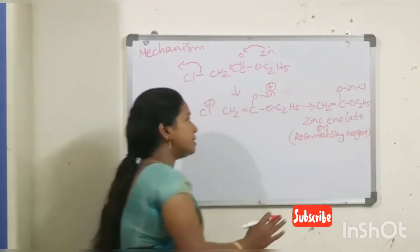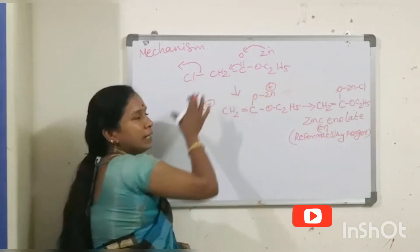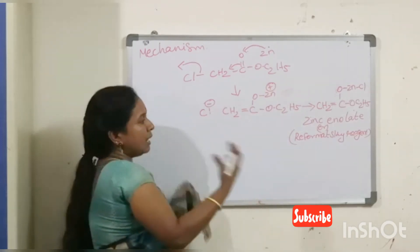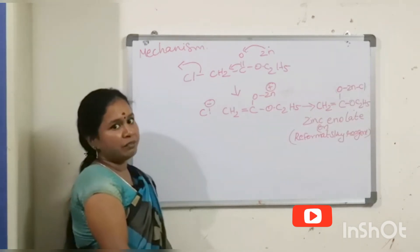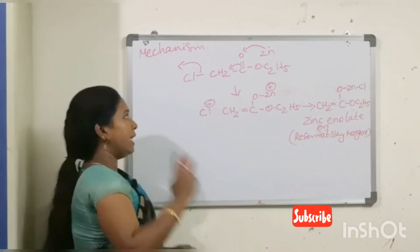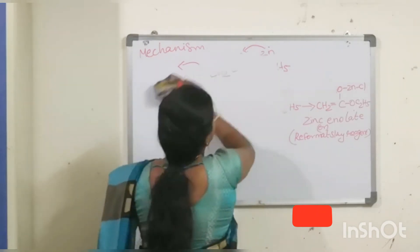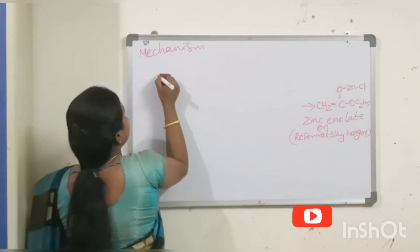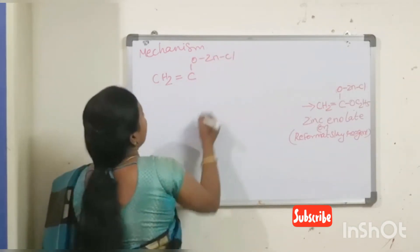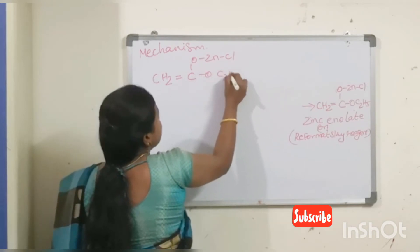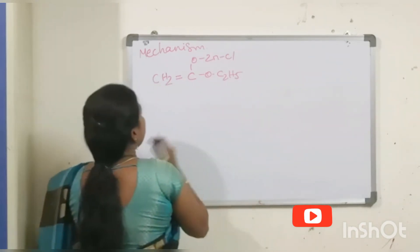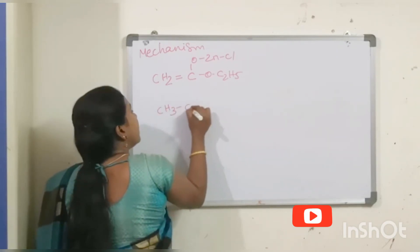This completes Step 1 — the formation of zinc enolate from one reactant. When zinc bonds to oxygen and chlorine leaves as a positive charge on zinc, the zinc enolate is formed. Step 2 is how the zinc enolate reacts with acetone. The zinc enolate (CH₂=C(OZnCl)–O–C₂H₅) reacts with the carbonyl compound.